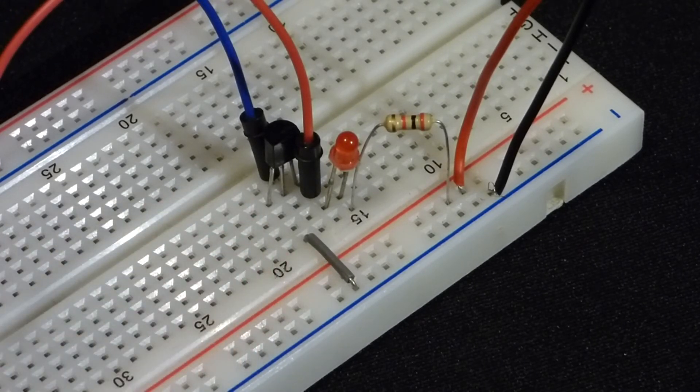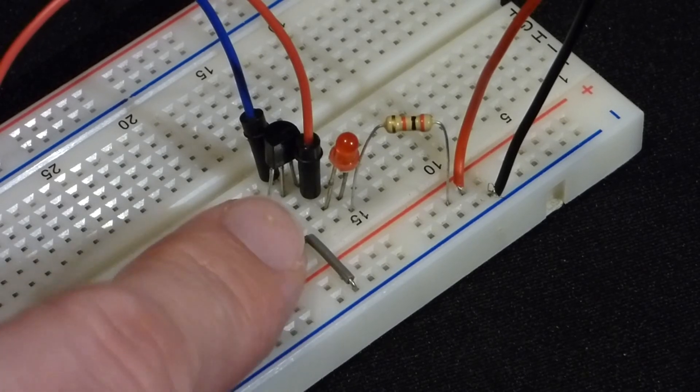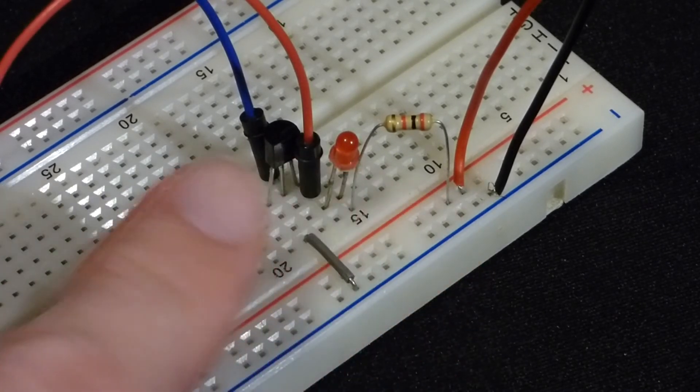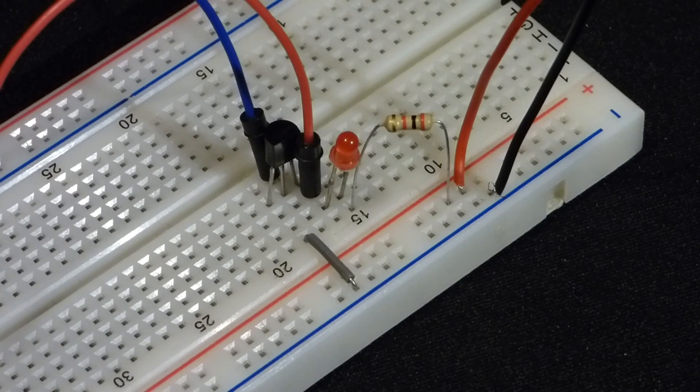You can see the little bit of current flowing through my body to the base of the transistor allows a lot more current to flow through the resistor, the LED and the transistor.